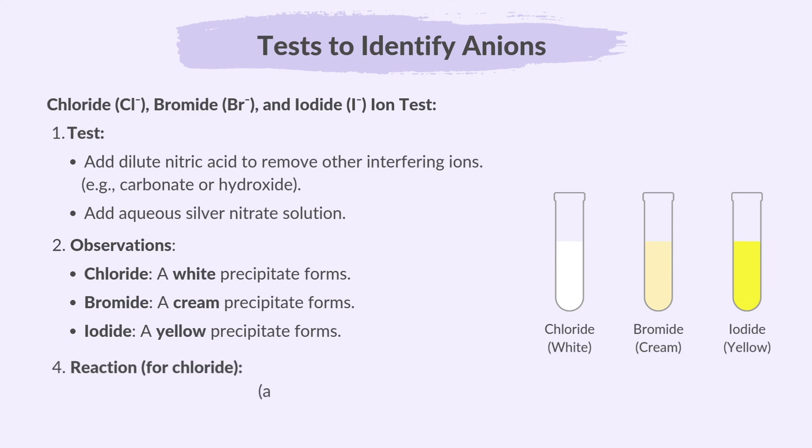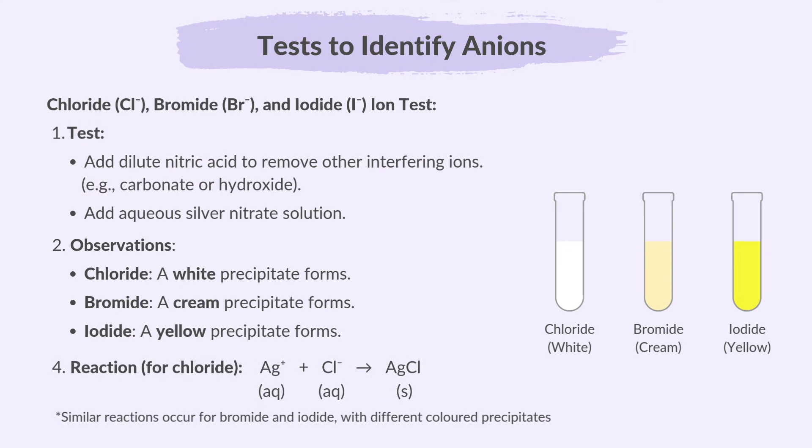Here's the reaction for chloride. Similar reactions occur for bromide and iodide with different coloured precipitates.